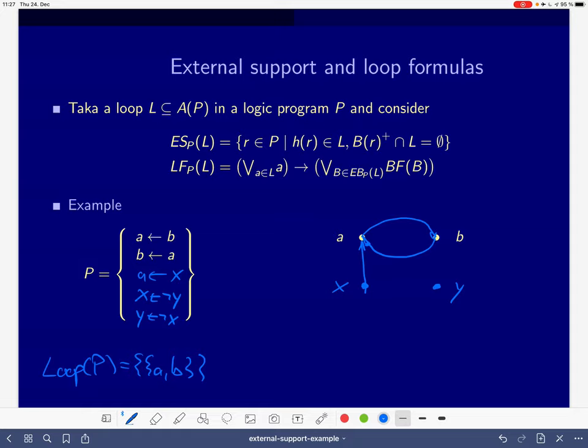And this has not produced any new cycles, but there is now this new feature that, depending on whether x is true or false, the loop has actually an external support or not. So let's look at this a bit more formally. The only external support of our loop a and b consists of this. We have something going in, and this is the external support. And what is nice, its head is in the loop, but the positive body literals do not belong to the loop. x does not belong to the loop. So we have an external support, which is a if x.